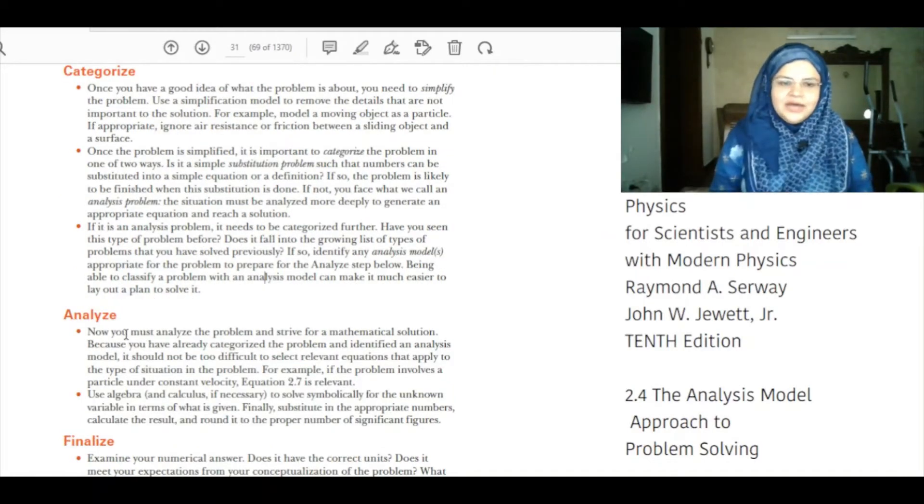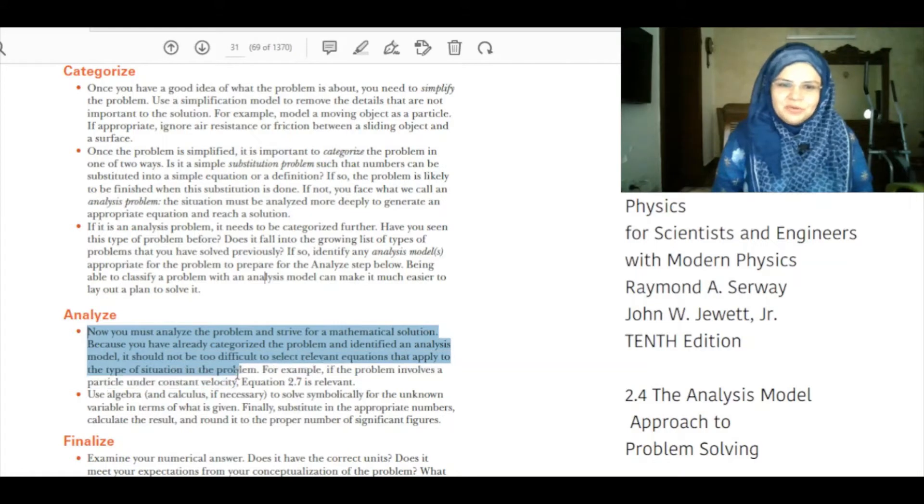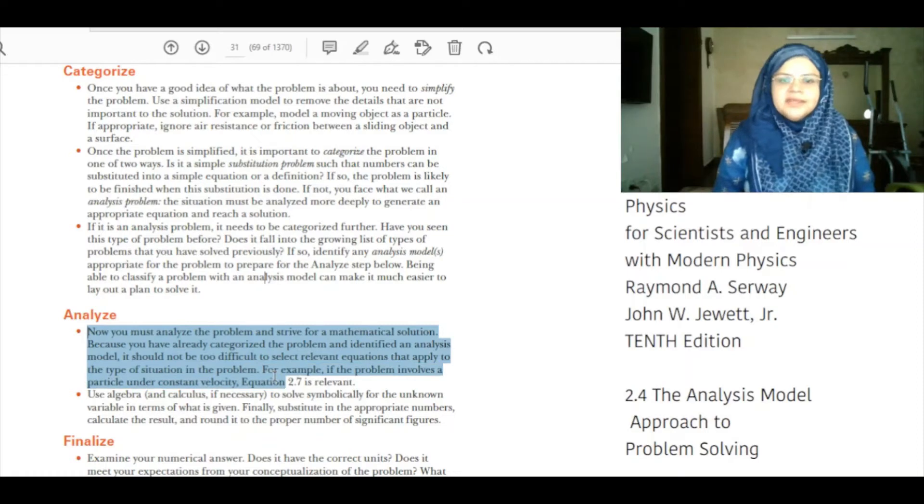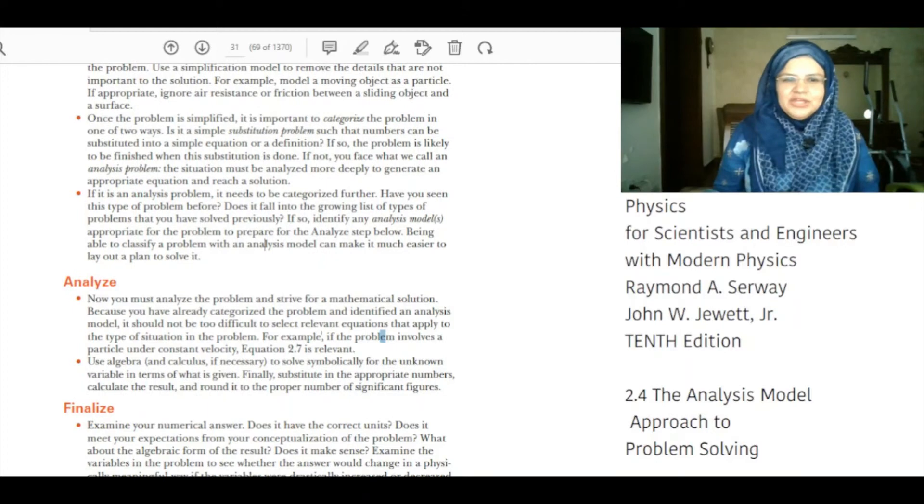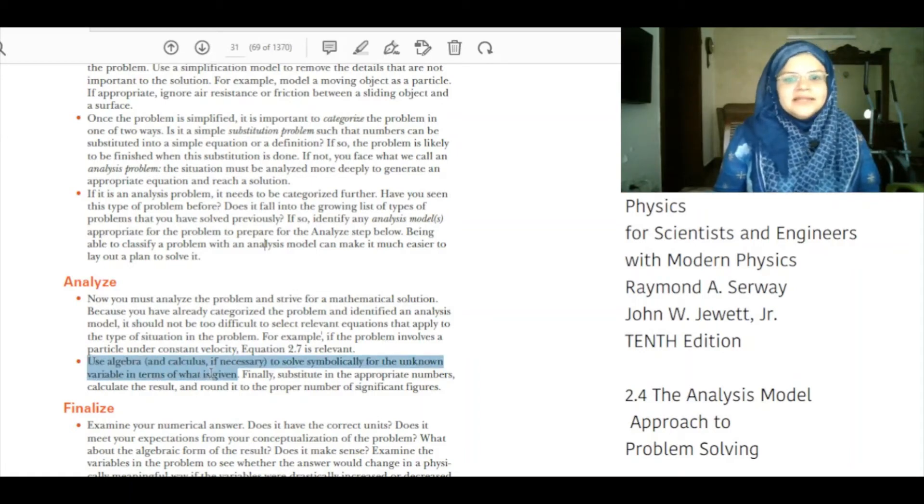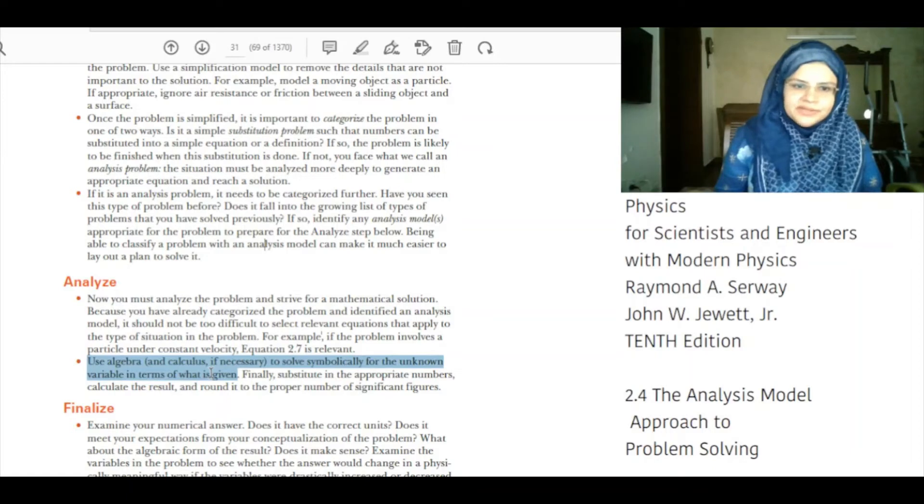Analyze. Now, you must analyze the problem and strive for a mathematical solution. Because you have already categorized the problem and identified an analysis model, it should not be too difficult to select relevant equations that apply to the type of situation in the problem. For example, if the problem involves a particle under constant velocity, equation 2.7 is relevant. Use algebra and calculus if necessary to solve symbolically for unknown variables in terms of what is given. Finally, substitute in the appropriate numbers, calculate the result and round it to the proper number of significant figures.